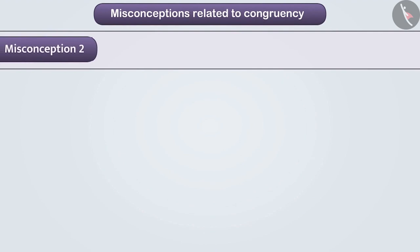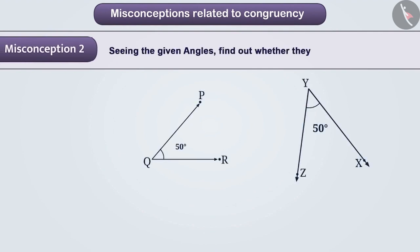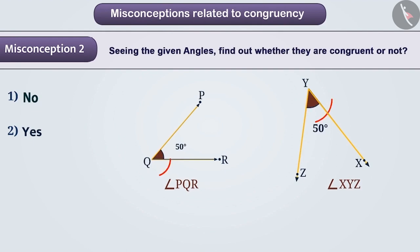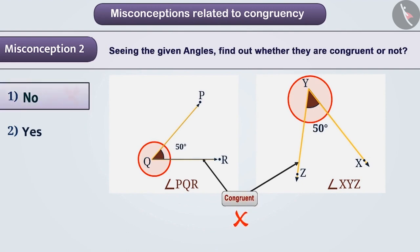Misconception 2. See the angles given below to find out whether they are congruent or not. Some children see that the length of arms and orientation of angle PQR and angle XYZ are different. So, they understand that the given angle is not congruent. So, they select option 1 which is wrong answer.